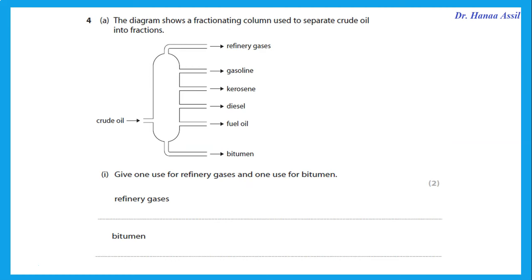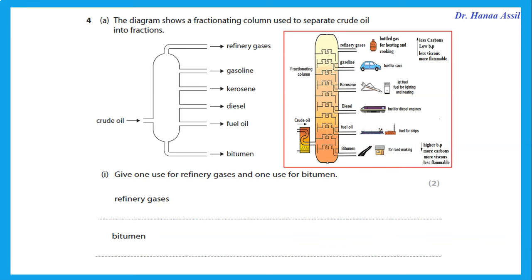Question 4: the diagram shows a fractionating column used to separate crude oil into fractions. Give one use for refinery gases and one use for bitumen. Refinery gases are used as bottled gas, used as fuel for heating and cooking. Bitumen is used for road making or road surfacing.